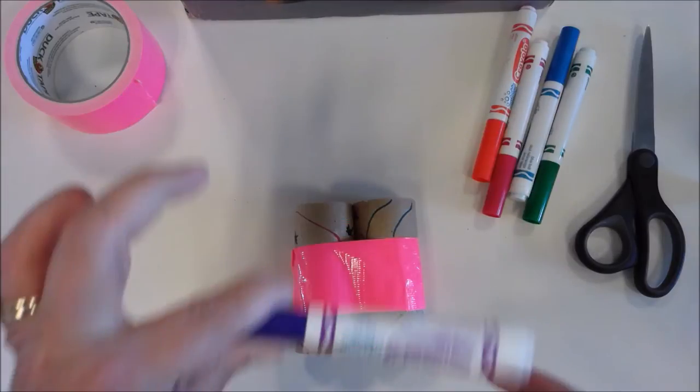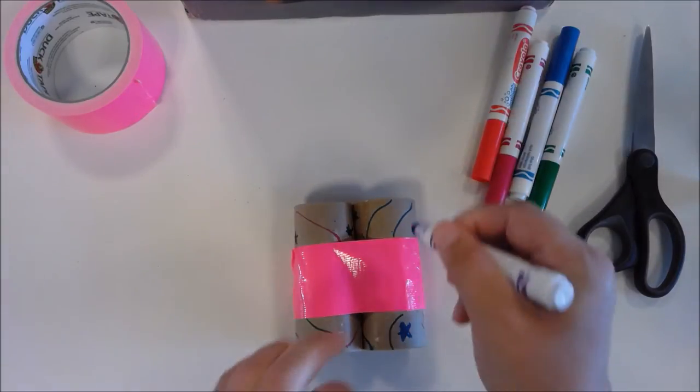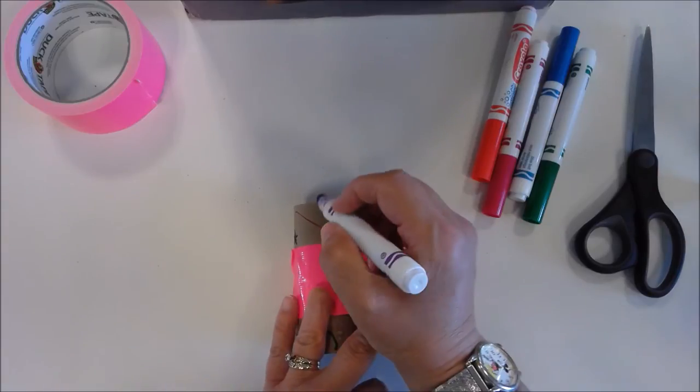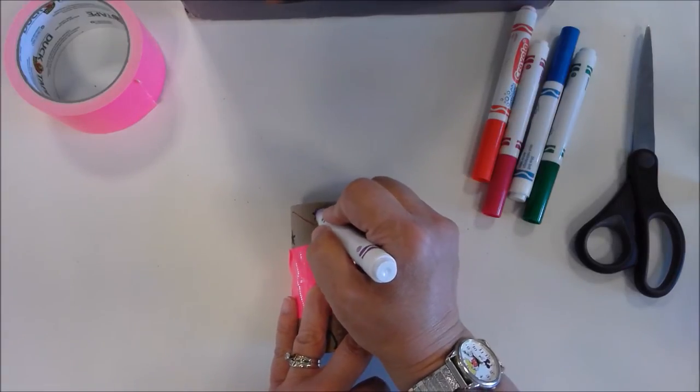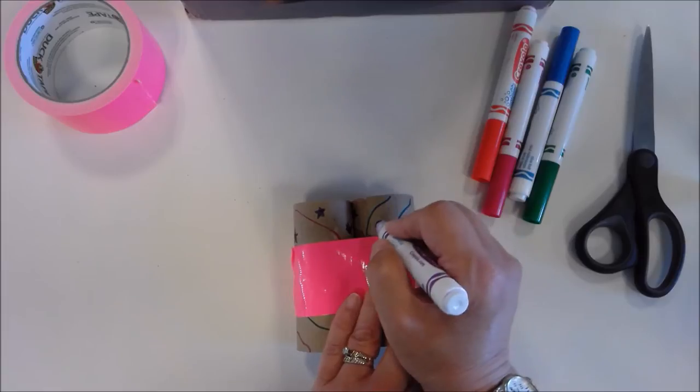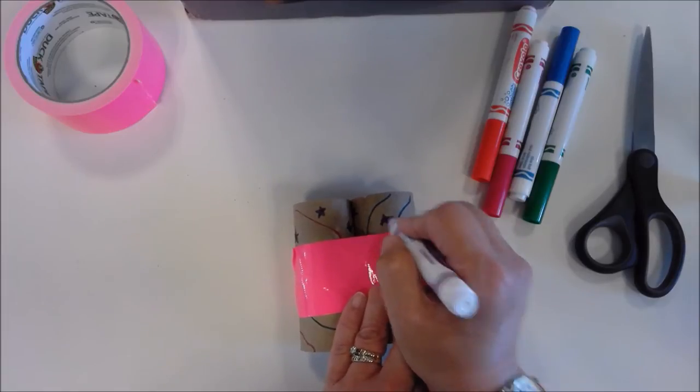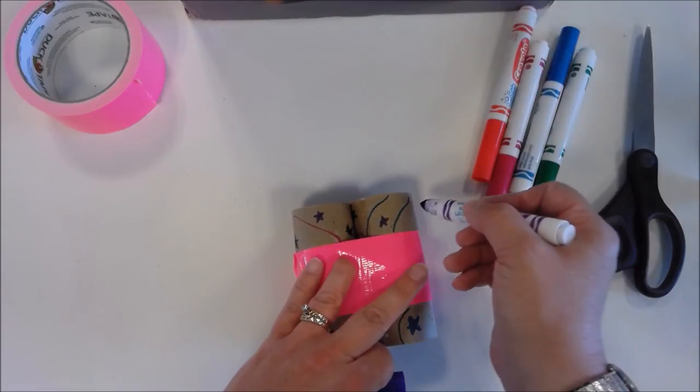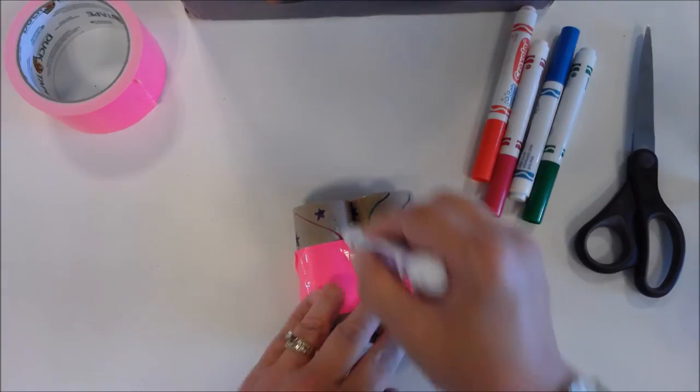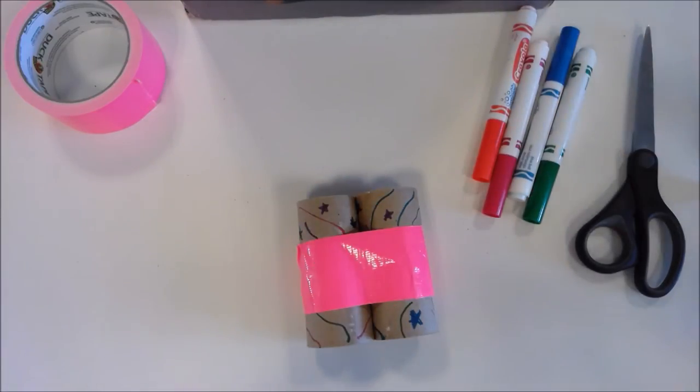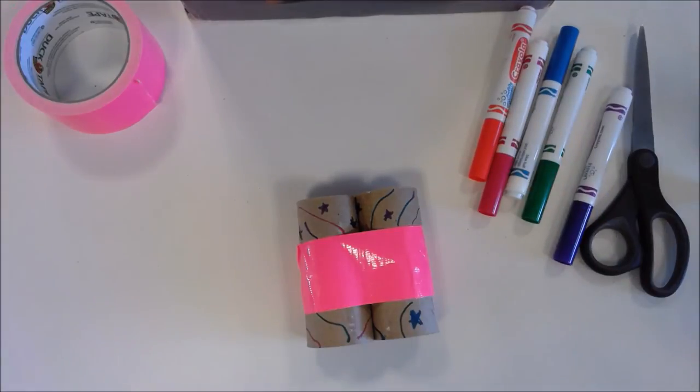So I'm going to take my purple marker here, and I am going to draw another star on here right over there. Yeah, I think I'm going to put another one right there. I'm going to add another swirl just like that. Now you can continue to decorate this as much as you like until you are satisfied with the binoculars that you've got.